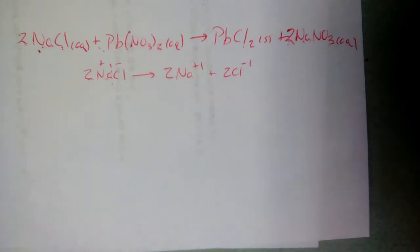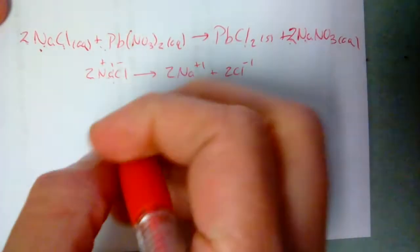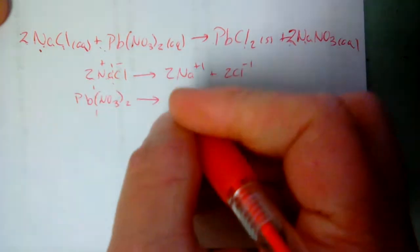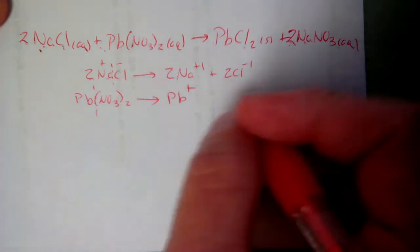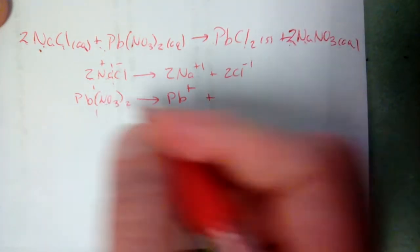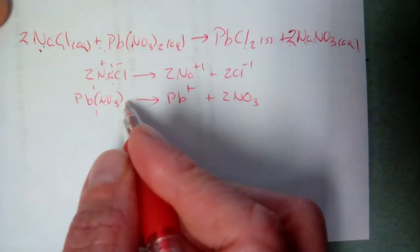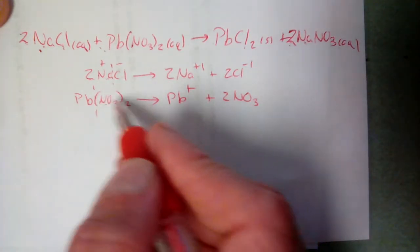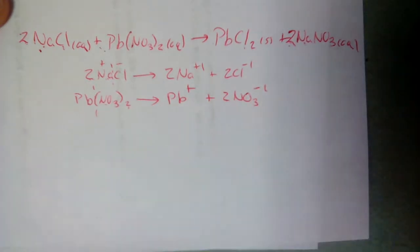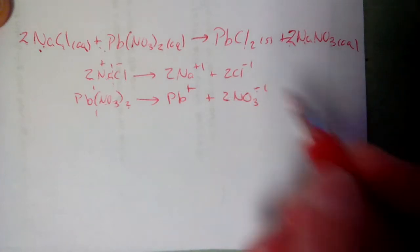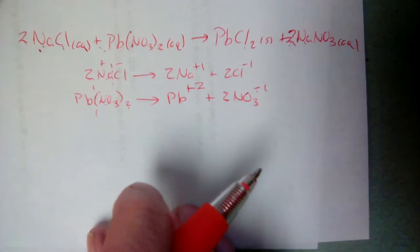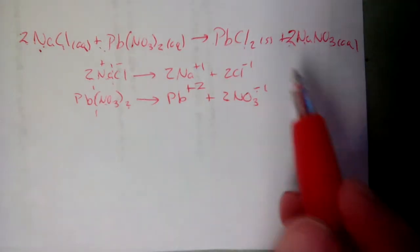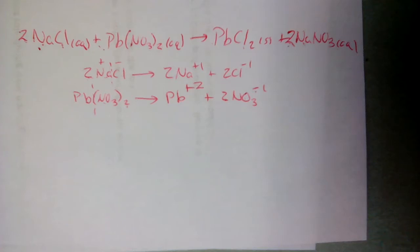Moving on to the next aqueous species: Pb(NO3)2 breaks down into Pb²⁺ and 2 NO3⁻. When you have a subscript, it changes the number of moles of that ion — the subscript 2 on nitrate means two moles of NO3⁻, each with a charge of −1, giving −2 total. Lead must then be +2 to balance, which is why it's named lead(II) nitrate. Lead(II) chloride is a solid, so we don't break it down.